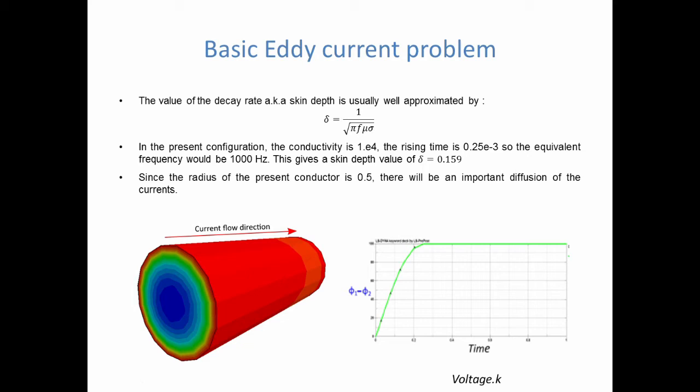In our case, if you do the quick maths for the example which we had, you will see that we had a skin depth value of about 0.16, and the radius of the conductor was 0.5, so there was plenty of diffusion going on. So this is why we were observing what we were observing.